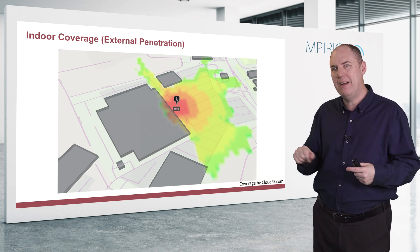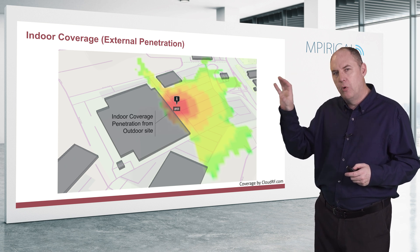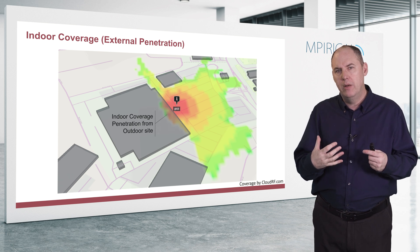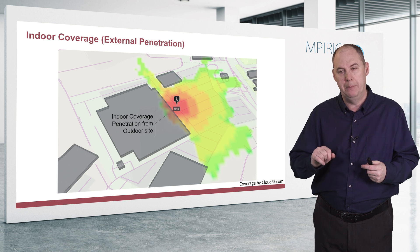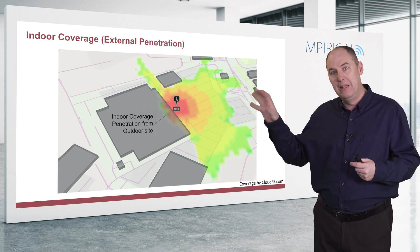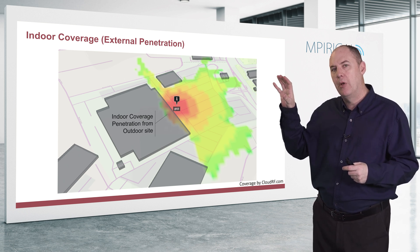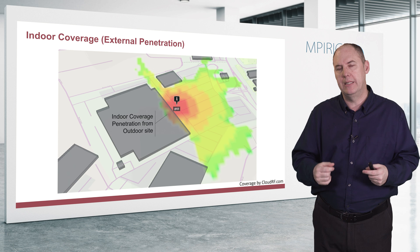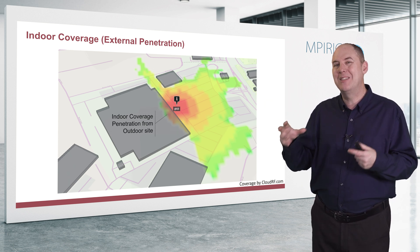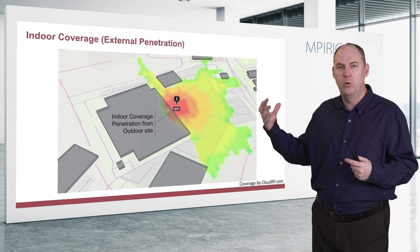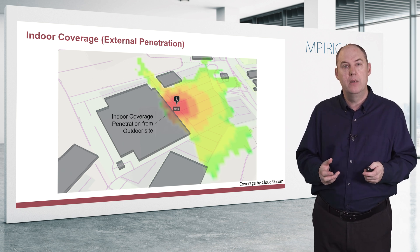When the signal hits a building, we have certain issues. Focusing on the main building, we do get some coverage and the tool predicts a certain signal level going in. However, it depends on the building's materials and frequency of operation, which have a big impact on how much signal actually enters. This illustrates the issue: someone inside that building trying to use the outdoor macro cell or umbrella cell may face real connectivity challenges.